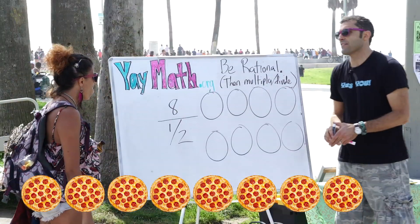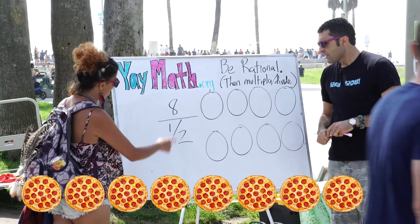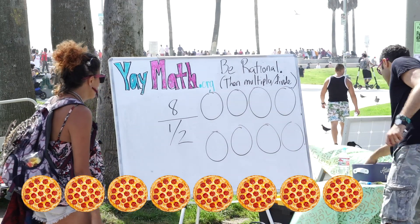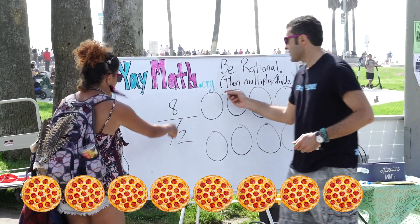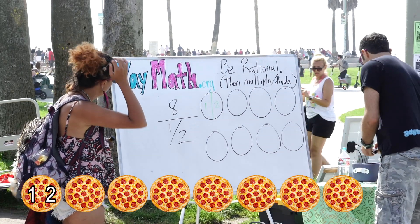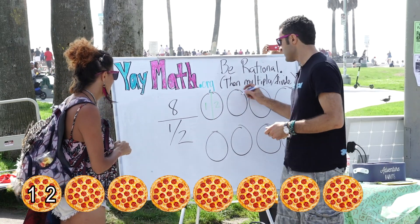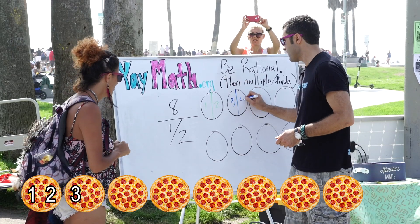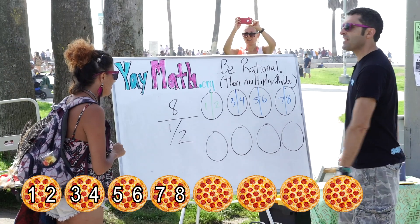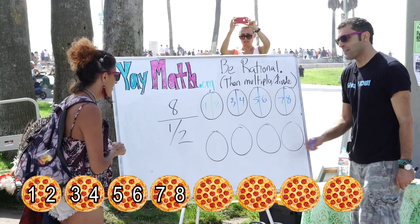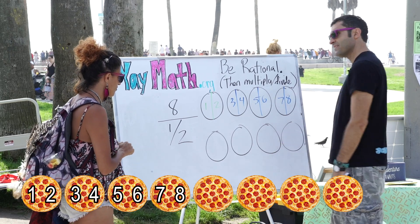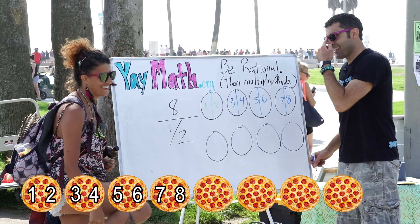So we're asking ourselves, how many times does one-half go into eight? How many halves in here? Two. One, two — that's two. How many in here? Two more. Three, four. Do you see where this is going? How many all together? Nine, ten, eleven, twelve, thirteen, fourteen, fifteen, sixteen. Sixteen!